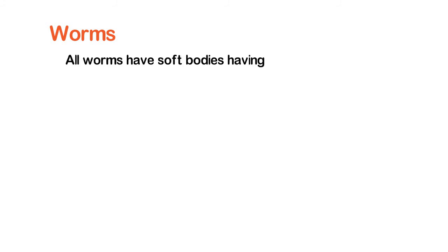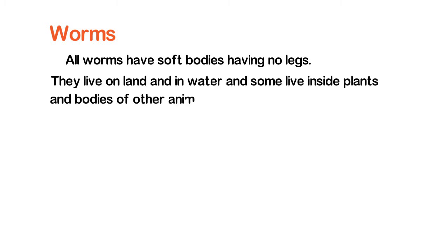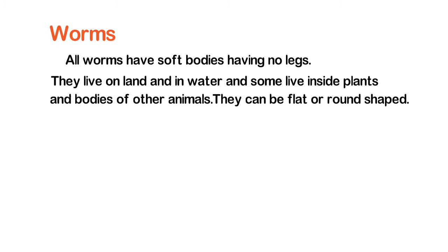All worms have soft bodies with no legs. They live on land, in water, and some live inside plants and the bodies of other animals. They can be flat or round shaped. Earthworms, roundworms, and tapeworms are examples.